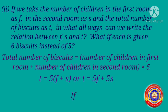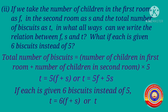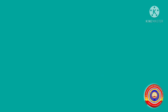If each is given 6 biscuits instead of 5, then we can write the relation using letters as T is equal to 6 into F plus S, or T is equal to 6F plus 6S. If the number of biscuits given to each is taken as B, in what all ways can we write the relation between F, S, T and B? Here we are assuming the letter B to the number of biscuits. Then T is equal to B into F plus S, or T is equal to BF plus BS.